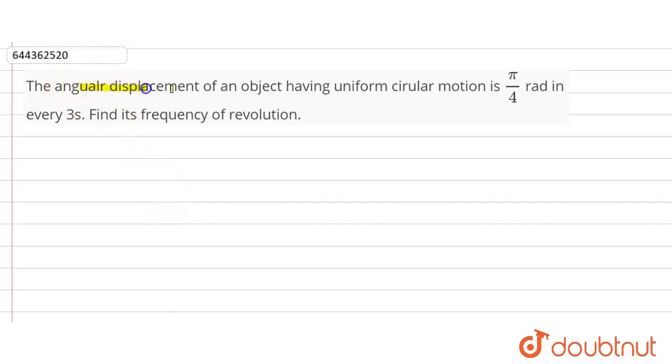The angular displacement of an object having uniform circular motion is π/4 radian in every 3 seconds. Find its frequency of revolution. So, given angular displacement here is π/4 radian.